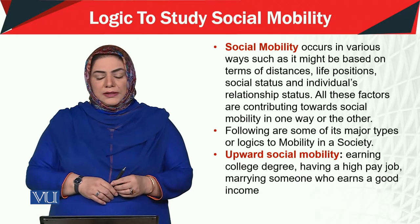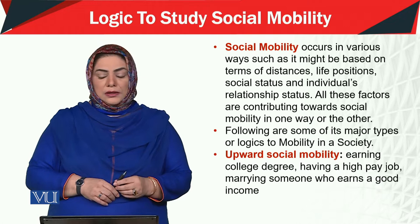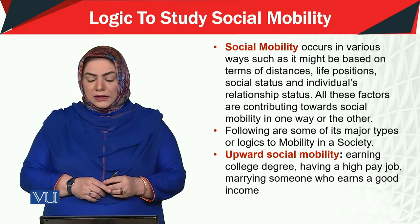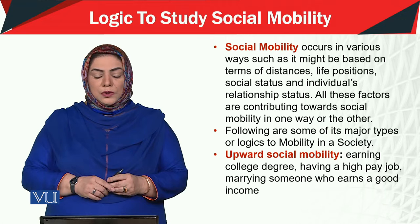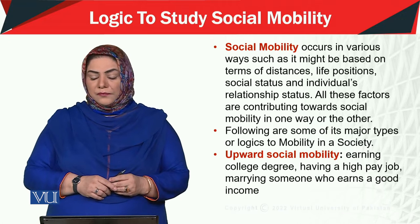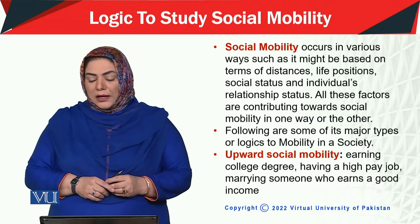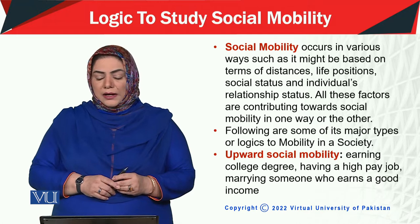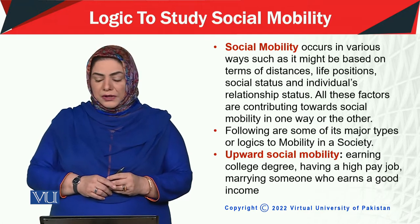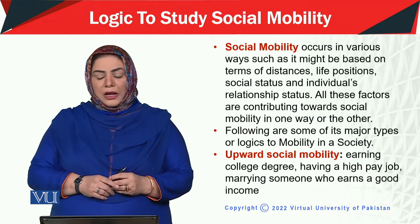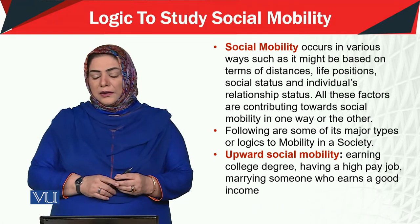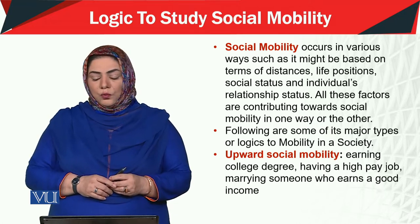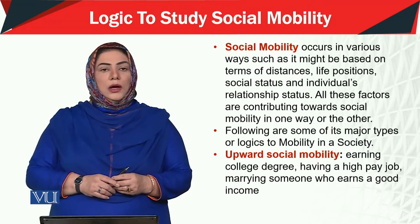Social mobility occurs in various ways. It might be based on terms of distances like position, life positions, social status, and an individual's relationship status. All these factors contribute towards social mobility in one way or the other.